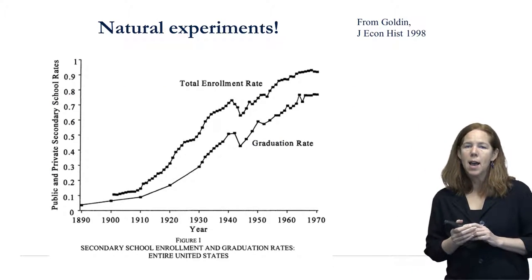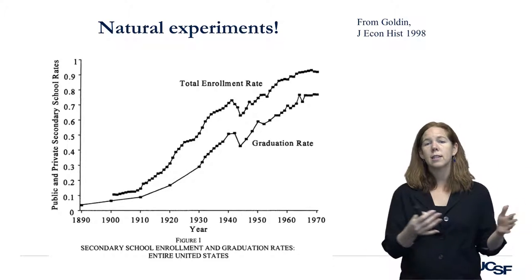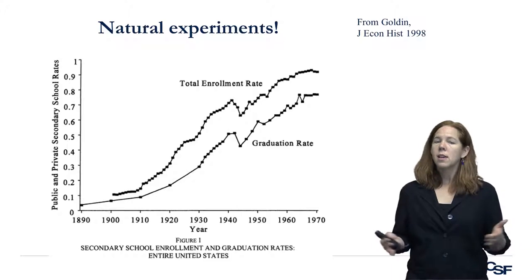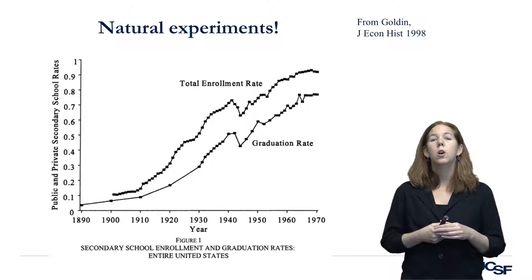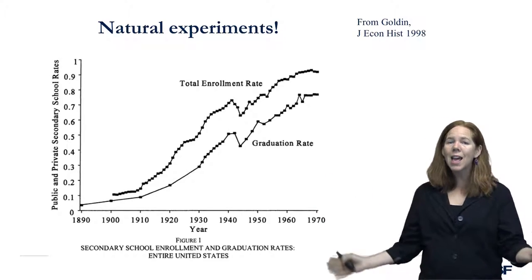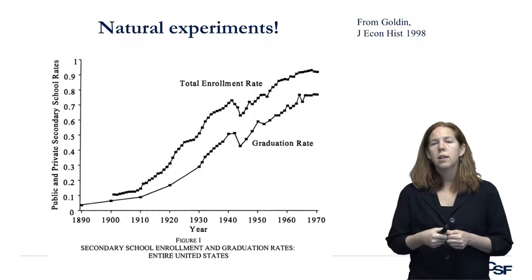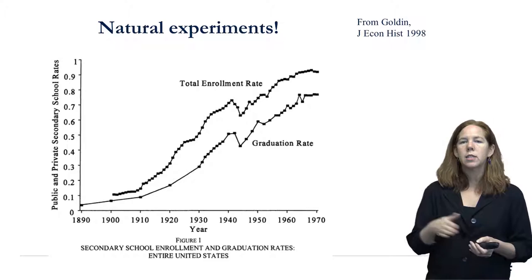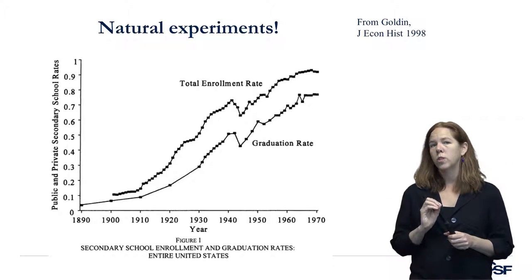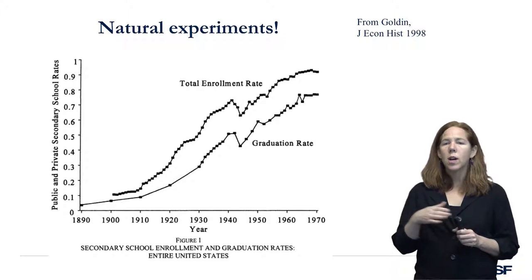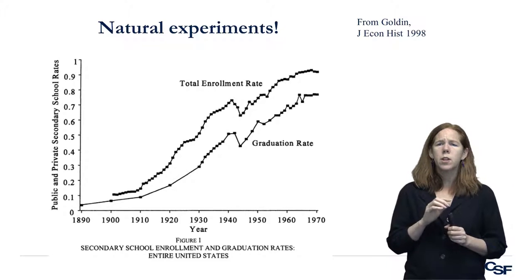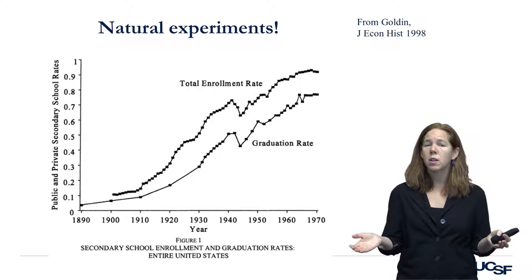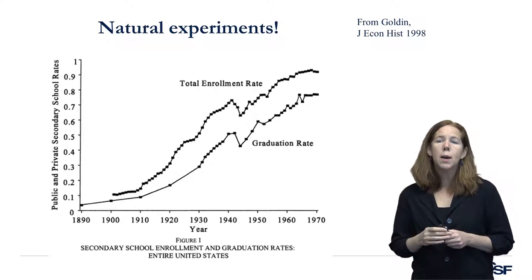Natural experiments — they happen all the time and are an incredible opportunity to understand how social context influences health. In the United States and nearly all high-income countries in the last century, we ran a huge natural experiment by moving a lot of people through increasing levels of education. This shows data from the economist Claudia Goldin — from essentially the beginning of the 20th century through the mid-20th century, high school graduation rates increased very quickly starting after World War I. We had rapid increases in high school attainment in the United States earlier than most European countries.